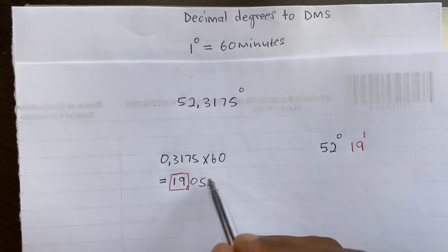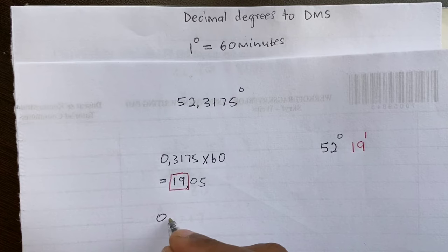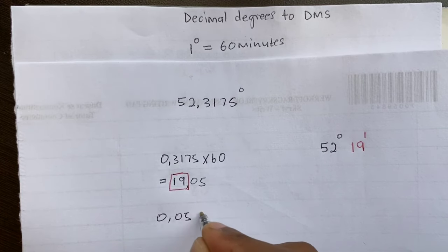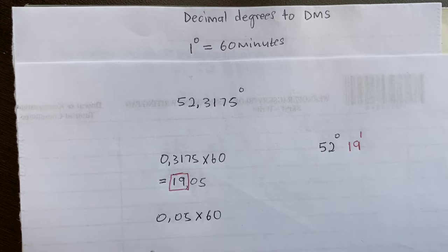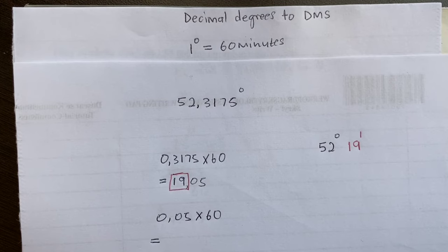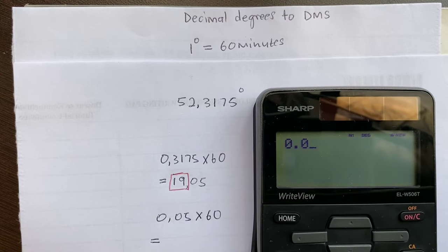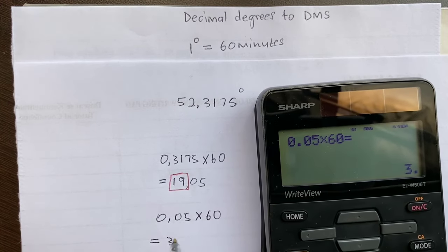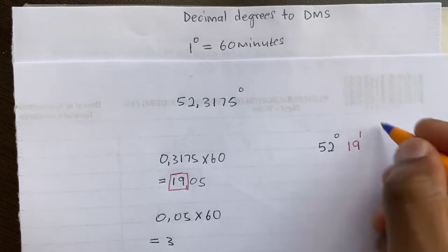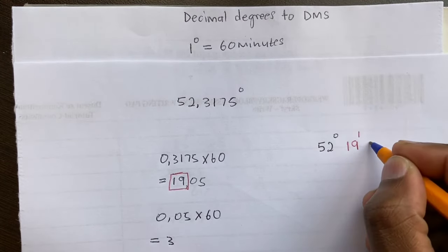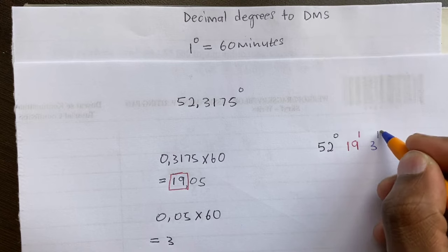Then take the decimal part 0.05 and multiply it by 60 as well, and the answer will be your seconds. So 0.05 times 60 equals 3. This 3 is your seconds. Your final answer is 52 degrees, 19 minutes, 3 seconds.